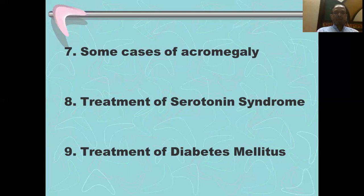Number seven: some cases of acromegaly may be relieved by cabergoline. Treatment of serotonin syndrome — discussed in our lecture on serotonin antagonists. If there is excess serotonin in the blood, possibly caused by increased administration of serotonergic drugs together like MAOIs and SSRIs, or SSRIs with triptans, we have discussed symptoms including hyperthermia and muscle rigidity. This treatment is with bromocriptine, a D2 receptor agonist.